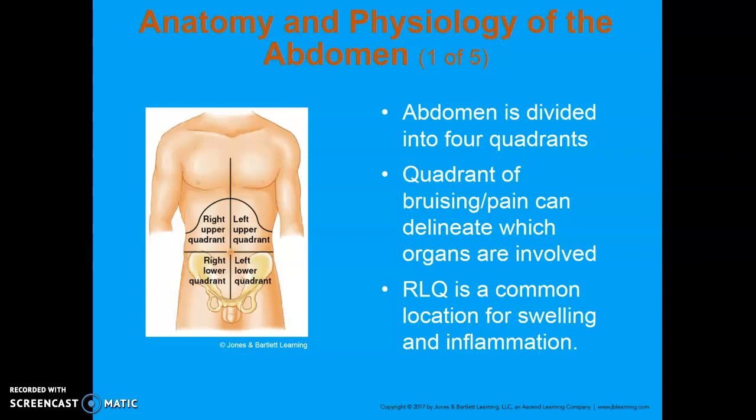The abdomen is divided into four different quadrants. The quadrant location of bruising and pain can help you figure out which organ is actually involved. Organs generally found in the upper right quadrant are your liver, gallbladder, duodenum of the intestine, and a little bit of the pancreas. The left upper quadrant is mostly your stomach and spleen. The left lower quadrant is your descending colon and part of your transverse colon. In the right lower quadrant, you have large and small intestines, the ascending colon, the other portion of the transverse colon, and the appendix.